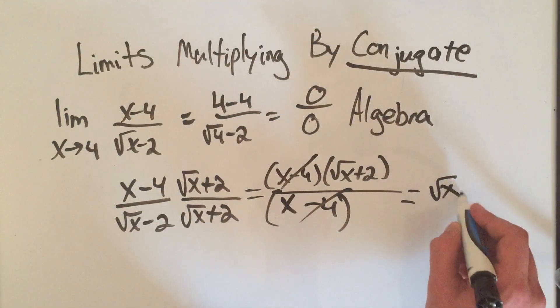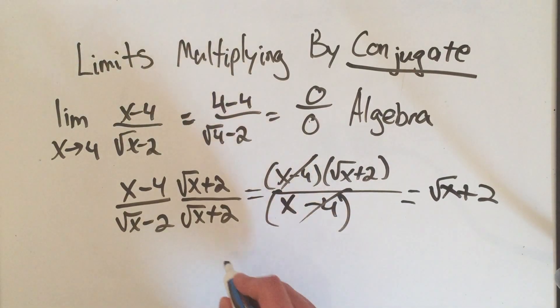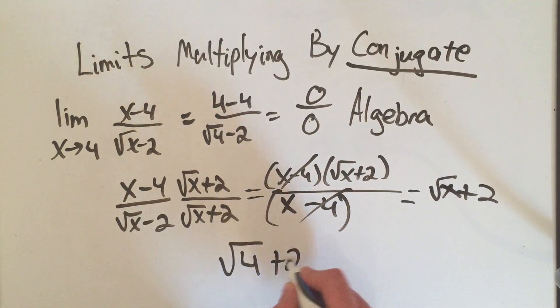I'm left with just square root of x plus 2. And now if I take the limit as x goes to 4, I get the square root of 4 plus 2. I think that's going to be 2.